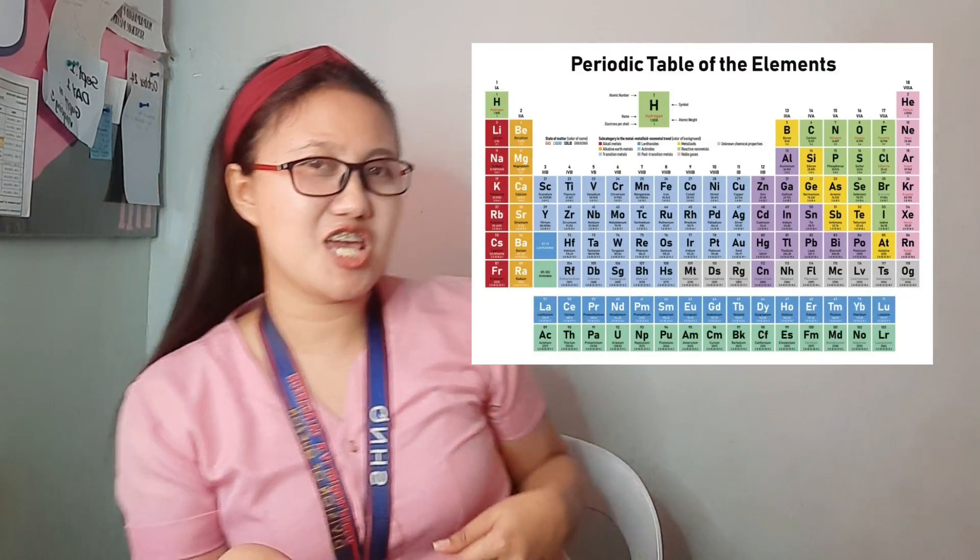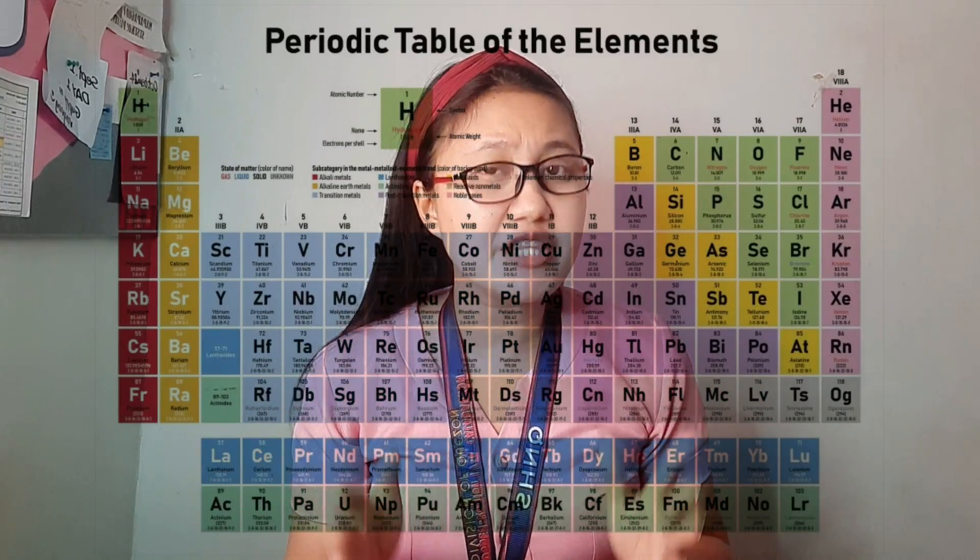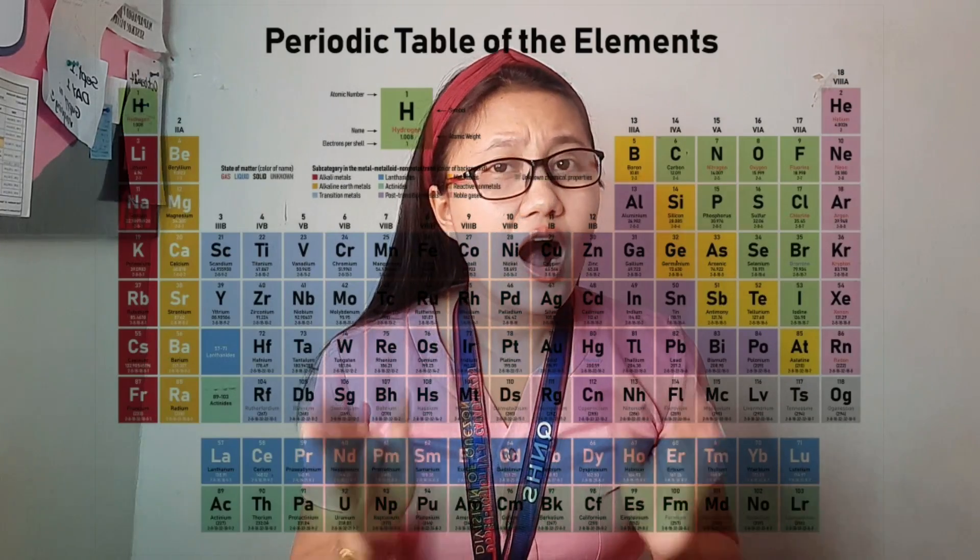Are you familiar with the periodic table of elements? There are 118 elements in the periodic table, and they are the alphabet of matter, because every tangible material is a combination of these elements. Let's discuss the element first.